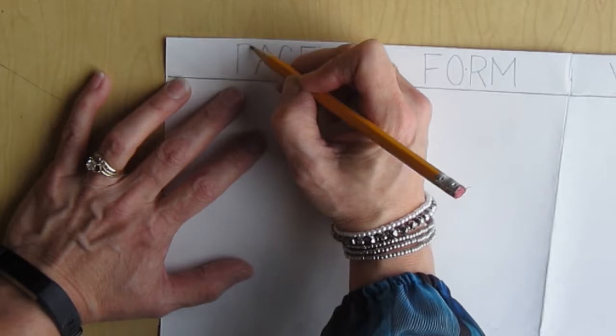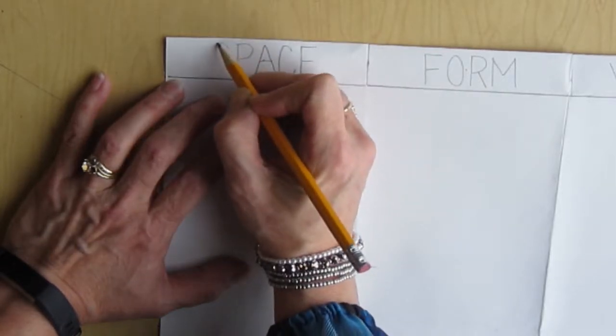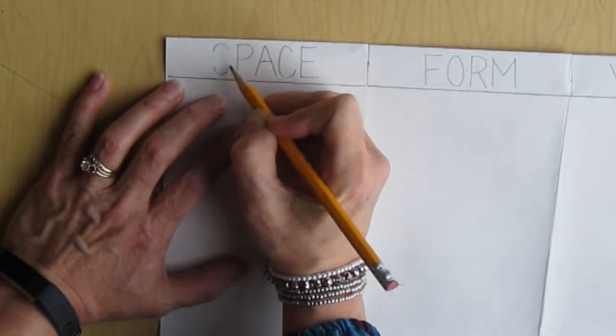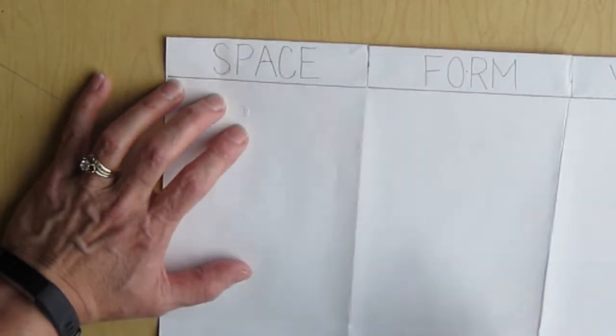Again, make sure all of your letters are the same height and there's equal spacing between all of your letters, so the words look like one word, not two separate words next to each other.